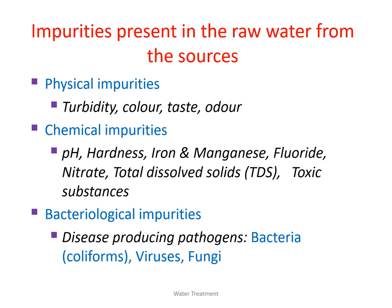Raw water is always characterized as having physical, chemical, and biological or bacteriological impurities. Turbidity, color, taste, and odor come under physical impurities. Chemical substances like pH, hardness, iron and manganese, fluoride, nitrate, sulfate, calcium, magnesium, and any other toxic substances like heavy metals come under chemical characteristics. The raw water mostly contains bacteria and some other microorganisms, but mostly we deal with bacteria. Therefore the biological characteristic is also called bacteriological characteristic.